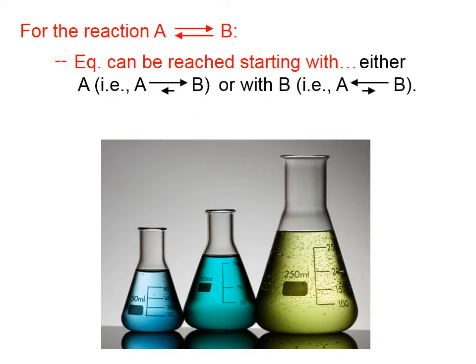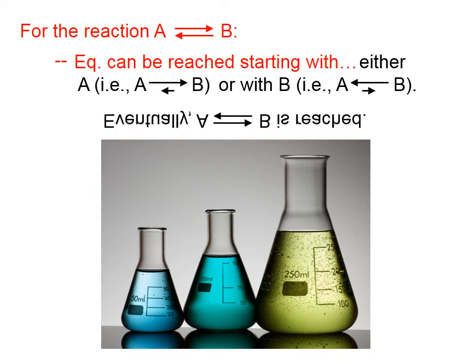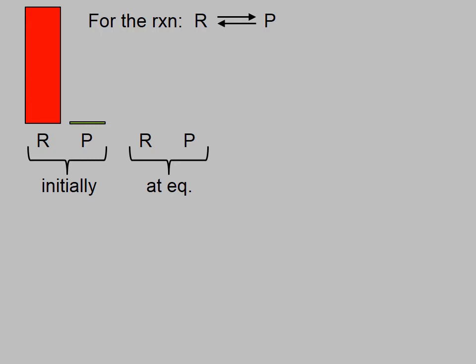For the reaction A turning into B and B turning back into A, equilibrium can be reached starting with either lots of A — lots of reactant and very little product — or with quite a bit of product and not nearly as much reactant. Eventually, we will reach an equilibrium where the amounts of A and B cease changing with time. Let's illustrate this with a few quick bar graphs. We have, initially, in one case, lots of reactant and almost no product. Eventually, we'll reach an equilibrium which, in this case, happens to be roughly 25% reactants and 75% products.